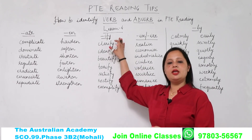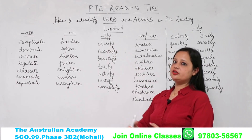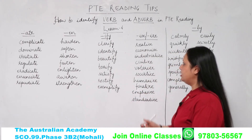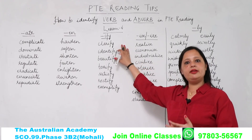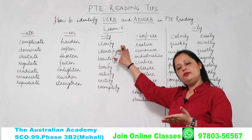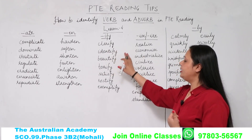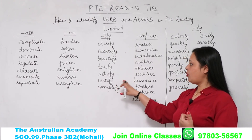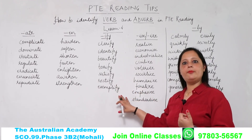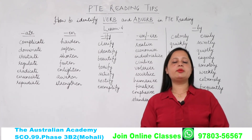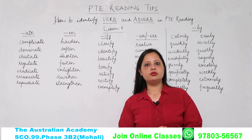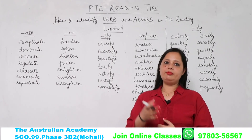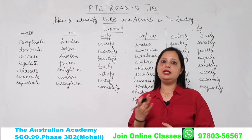Third, we have '-ify'. Jis ke last me '-ify' lagta hai, wo bhi verb hota hai. For example: clarify — 'clear' ke saath '-ify' lagaya, kya ban gaya? Verb — clarify. Similarly: identify, beautify, terrify, satisfy, rectify, exemplify. Isi tariqe se aur bhi words hain. Jitne zyada examples aap lete hain, utna hi better rahega recall karne ke liye.